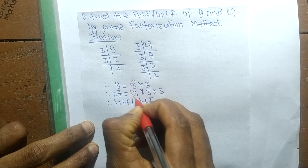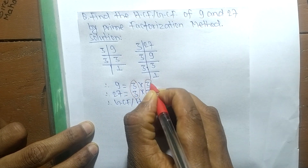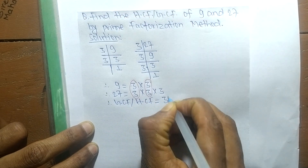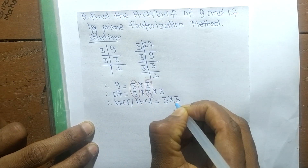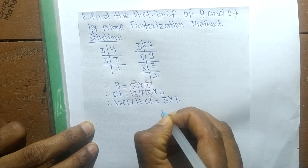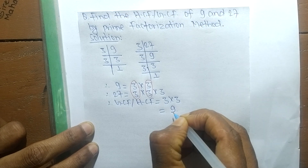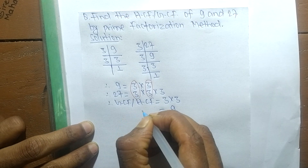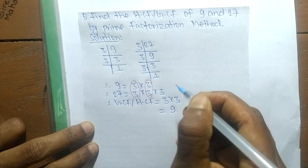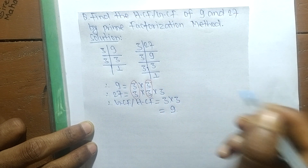The common factors are 3 and 3. So the GCF or HCF equals the product of all common factors: 3 times 3 equals 9. Therefore, 9 is the GCF or HCF of 9 and 27. Thanks for watching.